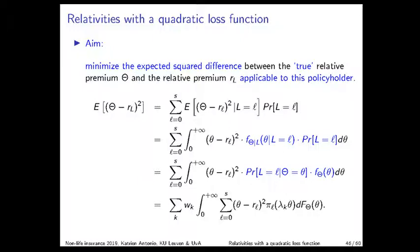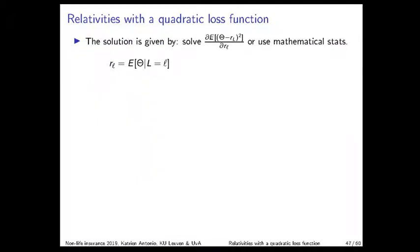To find which relativities RL minimize this squared difference, there are two routes. You can either take the derivative with respect to RL of the previous expression, or use the result from mathematical statistics derived in the credibility theory chapter: the estimator for theta that yields minimum mean squared error is the conditional expectation of theta given the level L occupied in the steady state distribution. Our goal is therefore to calculate E[theta | L = l].